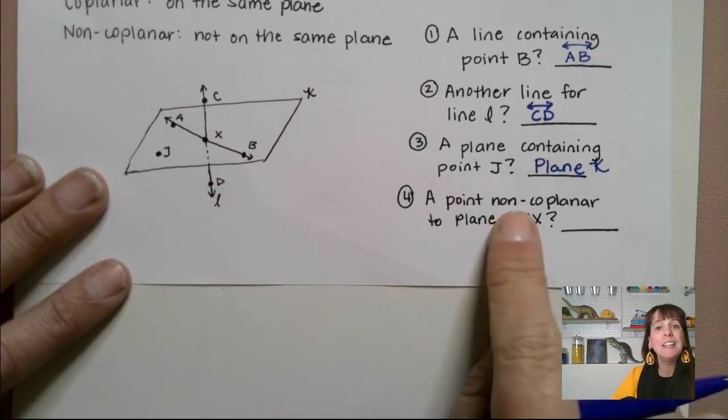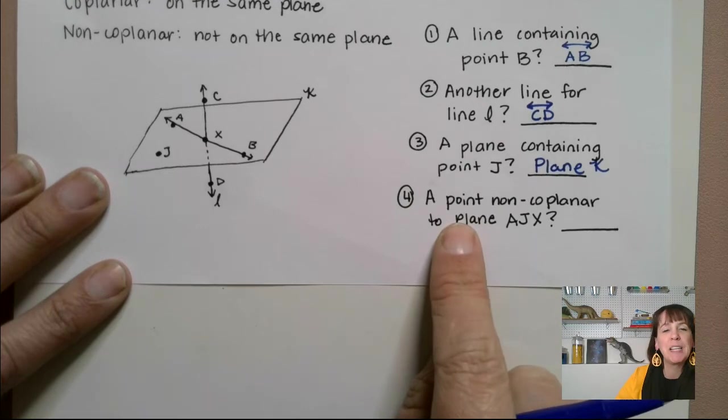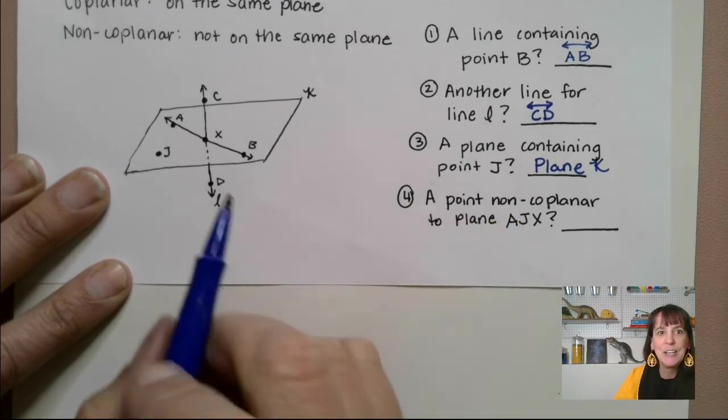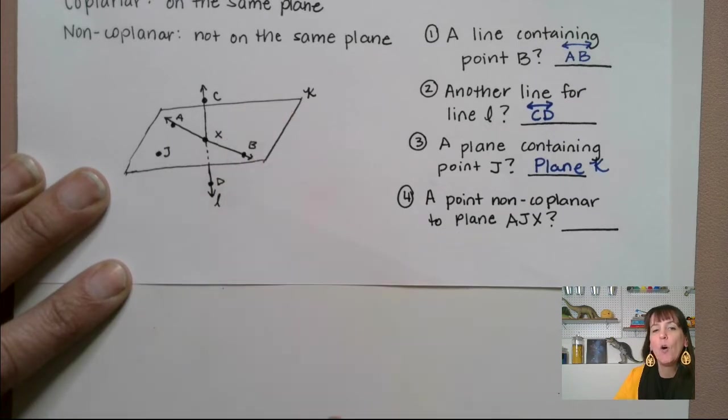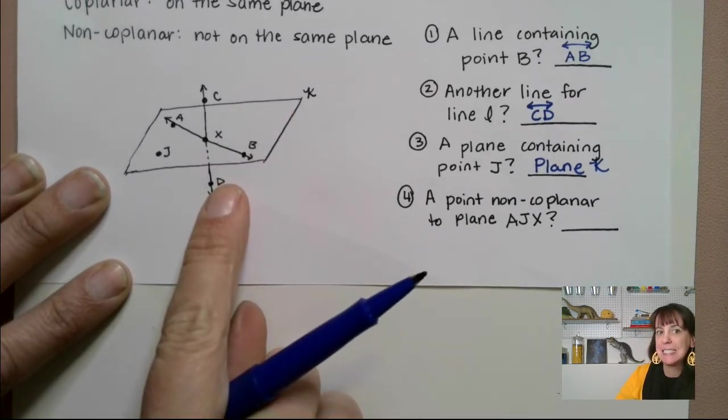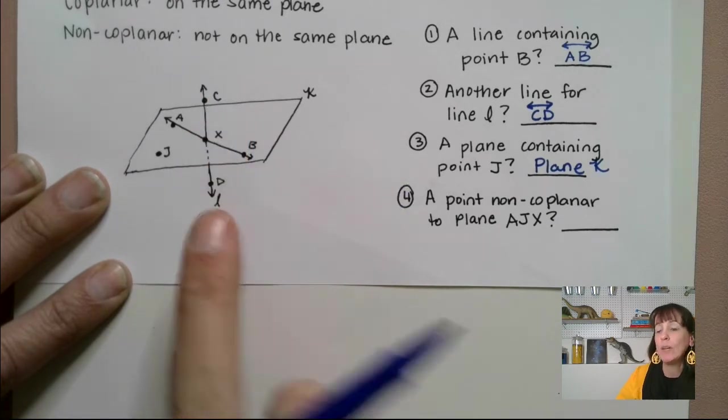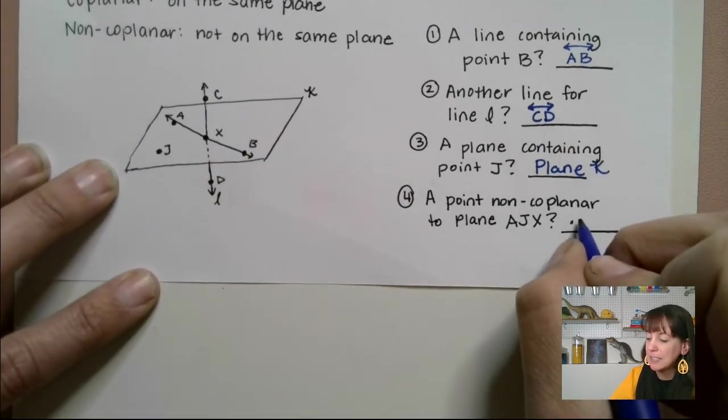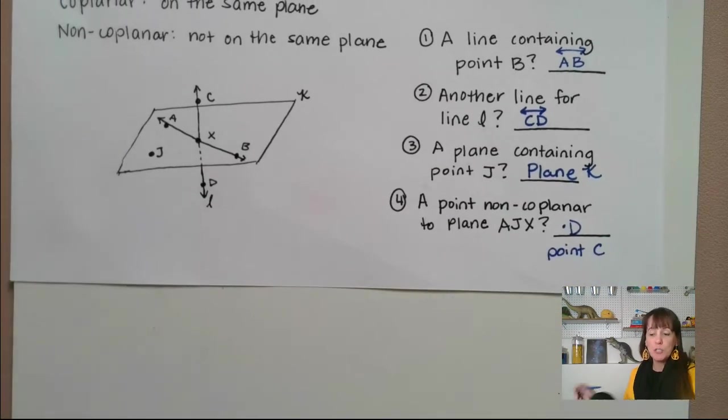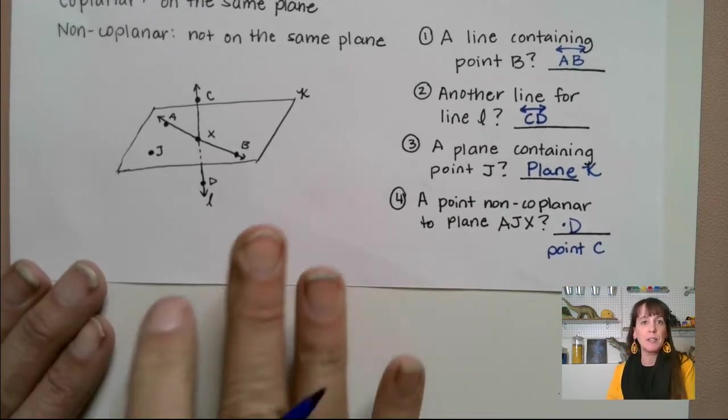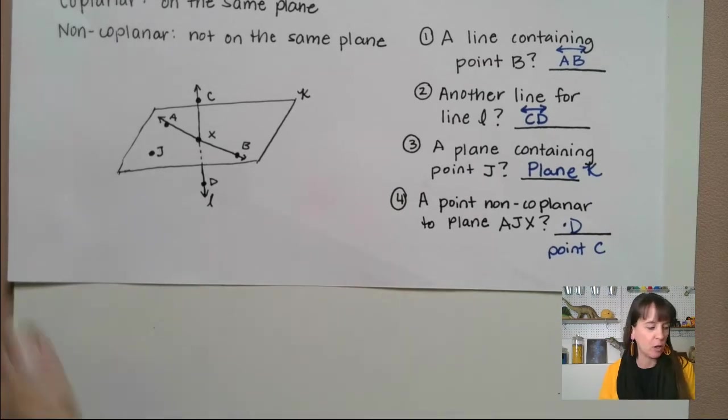A point non-coplanar to plane AJX. So AJX, this plane right here, what would be a point that is not on that plane? Well, it looks like D and C are both points that would not be on that plane. So we could say point D, or you could say point C. So make sure that you add those to your vocabulary list if you haven't already done that.